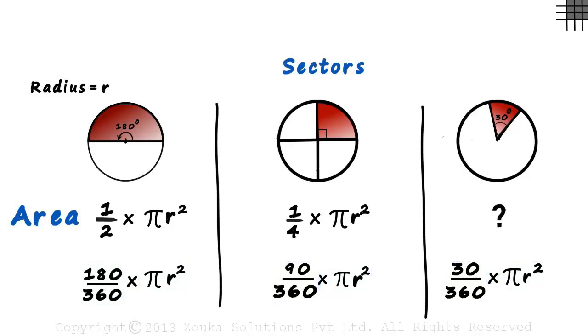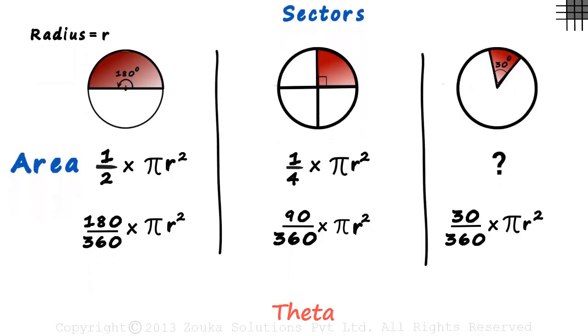To generalize the formula for a sector, we can say that if the sector angle is theta, then the area of a sector will be theta by 360 multiplied by pi r squared.